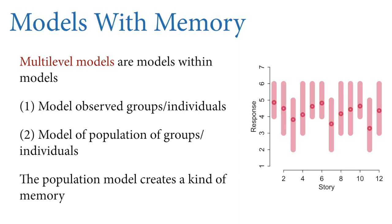The second model in a multilevel model is a model of the population of those groups and individuals, including unobserved groups and individuals. Why would that be useful if we haven't observed them? Because the population model creates a kind of memory, and that memory is extremely useful because it generates expectations for the first and second observations and so on for new groups.